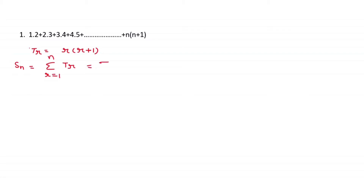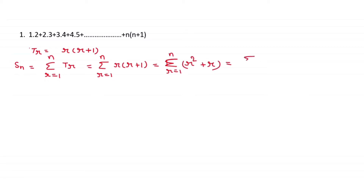So Sn equals summation r equal to 1 to n of r multiplied by (r+1). Let's expand this. What will happen? Summation r equal to 1 to n of (r² + r), which equals summation r equal to 1 to n of r² plus summation r equal to 1 to n of r.